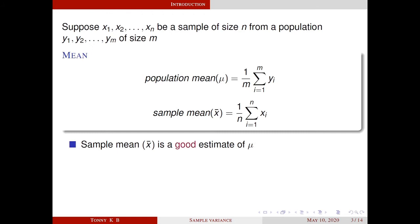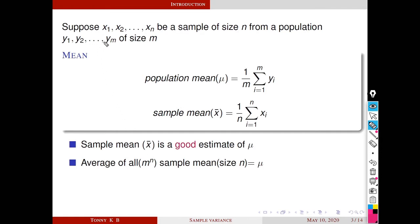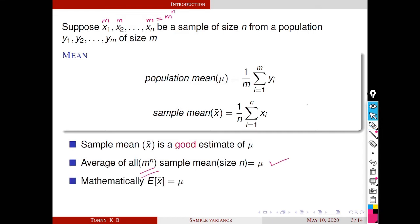The term good is relative. Here, good means the average of all sample means of size n is mu. There are m raised to n such samples. Because the sample x1, x2, ..., xn are independent, x1 can choose any value from the population y1, y2, ..., ym, so x1 has m choices. Since x2 is independent of x1, x2 also has m choices, and similarly xn also has m choices. So by the product rule, there are m raised to n samples of size n total. Mathematically, this means expectation of x bar equals mu. This x bar is called an unbiased estimate of mu. This will also be proved in the next lecture.